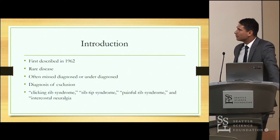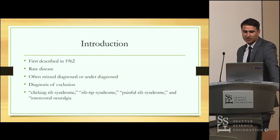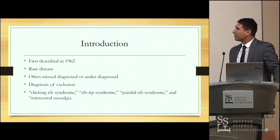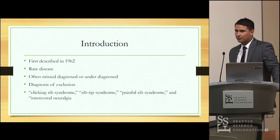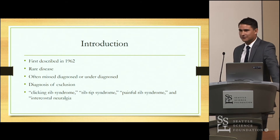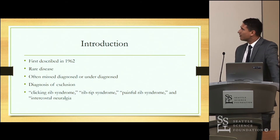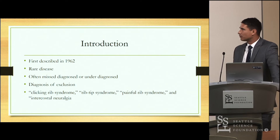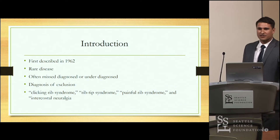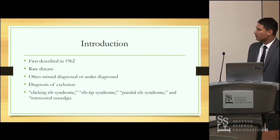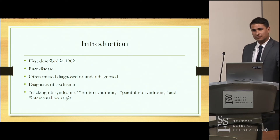A little background. The 12th rib syndrome was first described in 1962. It's a pretty rare disease — I didn't know about it before I started this research project. You won't see it in many textbooks. It's often misdiagnosed and underdiagnosed, and it's a diagnosis of exclusion, which makes it kind of difficult.